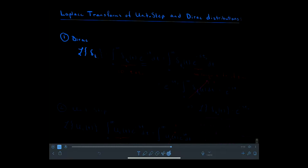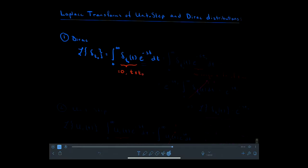We'll take the Laplace transform of delta subscript t0. That means performing an integral from 0 to infinity of delta_{t0}(t) times e^{-st} dt. This function is 0 whenever t is not t0, so the Dirac function suppresses any area under the curve coming from the exponential multiplier. We can invoke the sifting property: integrating from 0 to infinity, we only need the height of e^{-st} associated with t equal to t0.